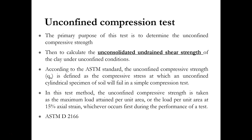Unlike the UU test, in this test the confining pressure sigma 3 is zero and axial load is rapidly applied to the specimen to cause failure. At failure, the total minor principal stress is zero and the major principal stress is sigma 1. The major principal stress sigma 1 will be equal to the maximum deviator stress.